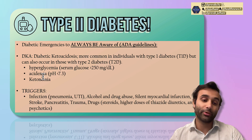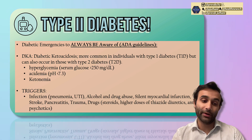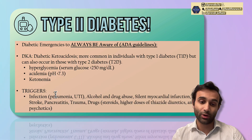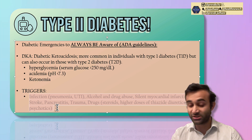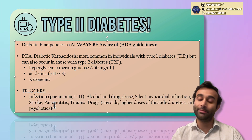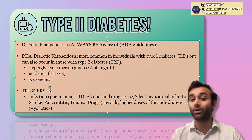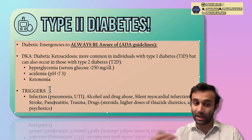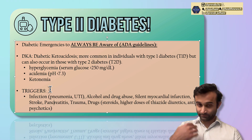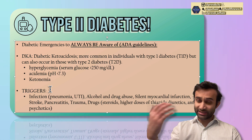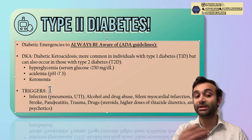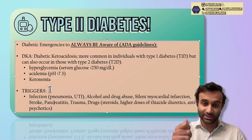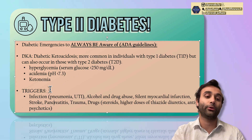The triggers for both HHS and DKA are similar. Think about whether the patient has an infection, alcohol or drug abuse, silent MI, or pancreatitis. All of these things can trigger someone with diabetes to go into DKA or HHS. It's important to remember that both DKA and HHS are a little more common in type 1 diabetics than type 2, but still very important to know.